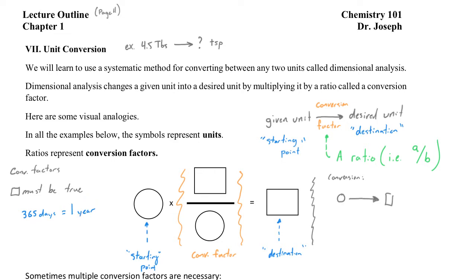For example, if I had one year equals 365 days, that's true and I can use that ratio as a conversion factor. But if I reversed this and wrote 365 years equals one day, that is definitely not true and I wouldn't be able to use this as a conversion factor.